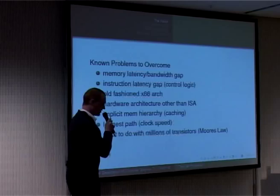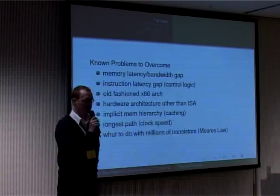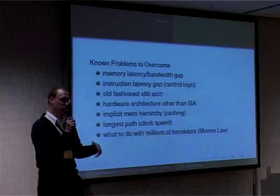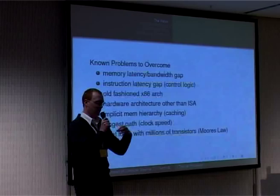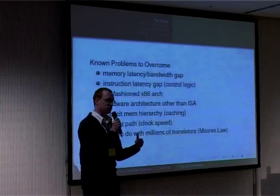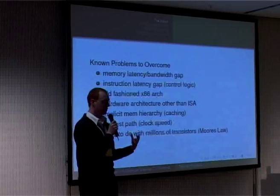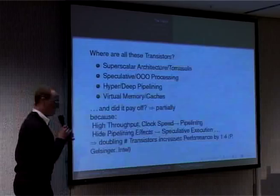The most important question is: what are we going to do with these millions of transistors? Every 18 months, according to Moore's Law, the number of transistors doubles. We can put more functionality in, but the CPU isn't getting faster — just getting more functionality while staying at the same speed. Maybe we can introduce more parallelism, but instruction-level parallelism is limited. The Tomasulo logic doesn't scale to infinity, so we have to go to a higher level.